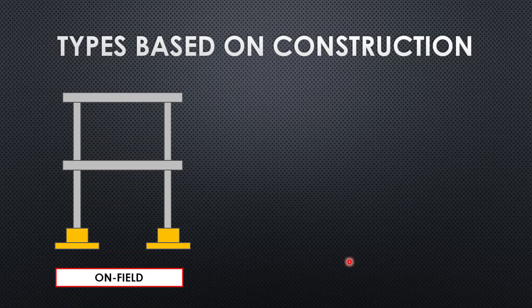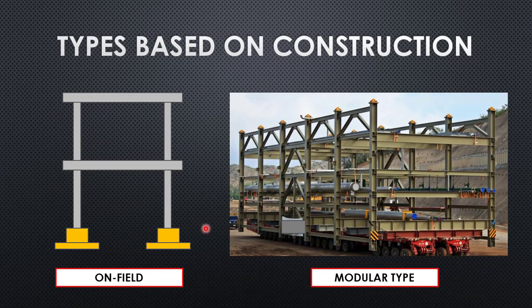Now we'll see the types of pipe rack based on construction. We have two types: the on-field pipe rack and the modular pipe rack. On-field pipe rack is constructed from scratch in the field — from zero to completion. Modular pipe rack is different: only the civil foundations are constructed in the field, while the entire pipe rack structure comes from outside. A vendor manufactures the entire pipe rack elsewhere and ships it to you, so you just receive and install it. This saves construction time in your project.